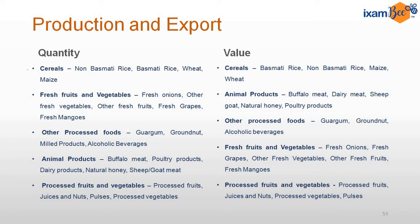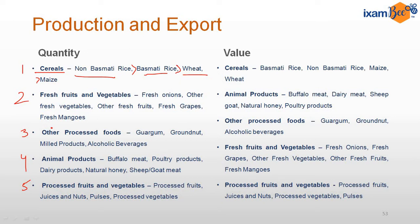Regarding production and export in India — such questions were asked in the Phase 1 exam. Quantity-wise, the highest exports are cereals, then fresh fruits and vegetables, then other processed foods, then animal products, then processed fruits and vegetables. Among cereals, the highest quantity exported is non-basmati rice, followed by basmati rice, then wheat, then maize. For fresh fruits and vegetables, the highest is onion, then other fresh vegetables, other fresh fruits, grapes, and mangoes.